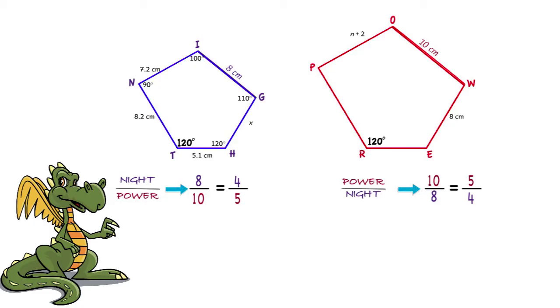Now, how can we use this information? We know that the side WE measures 8 centimeters. So we can find the length of GH by setting up a ratio, since GH is the corresponding side in knight.